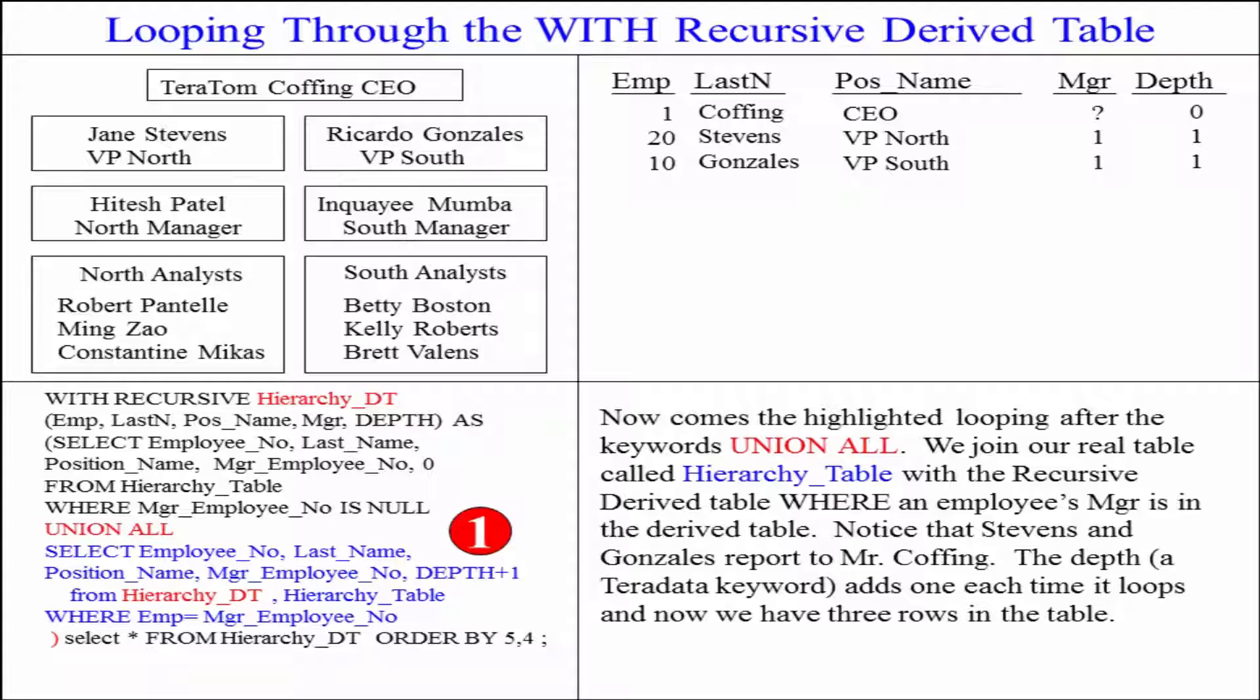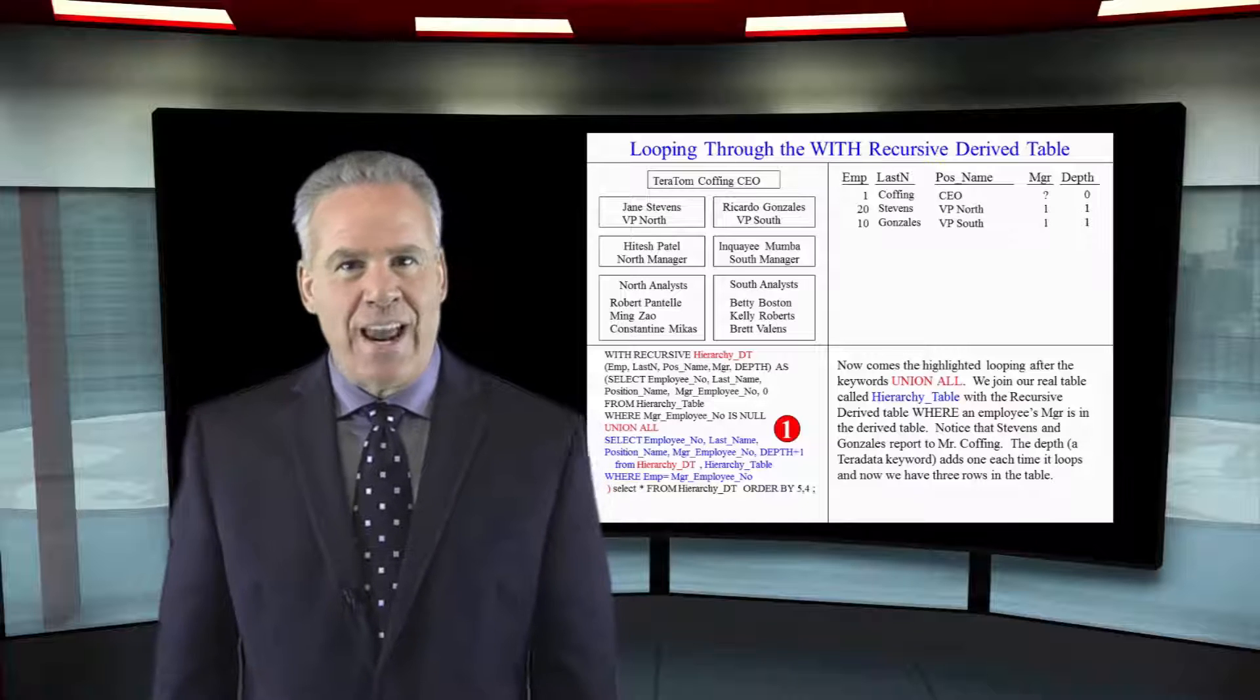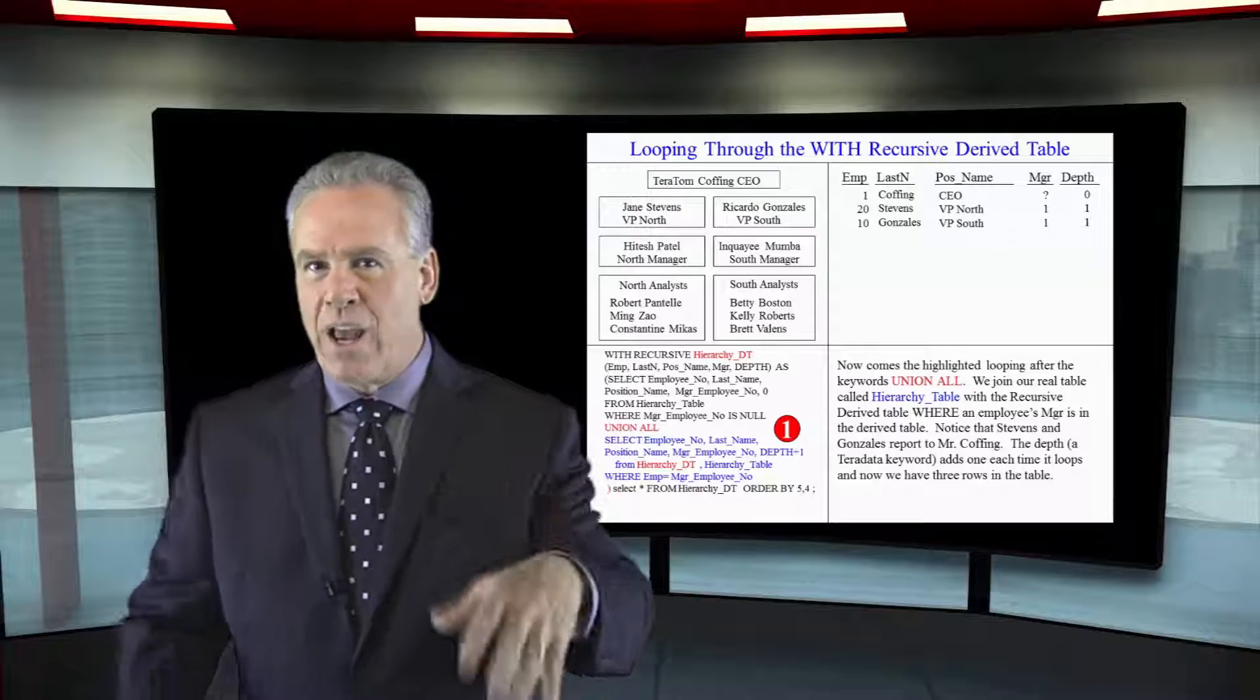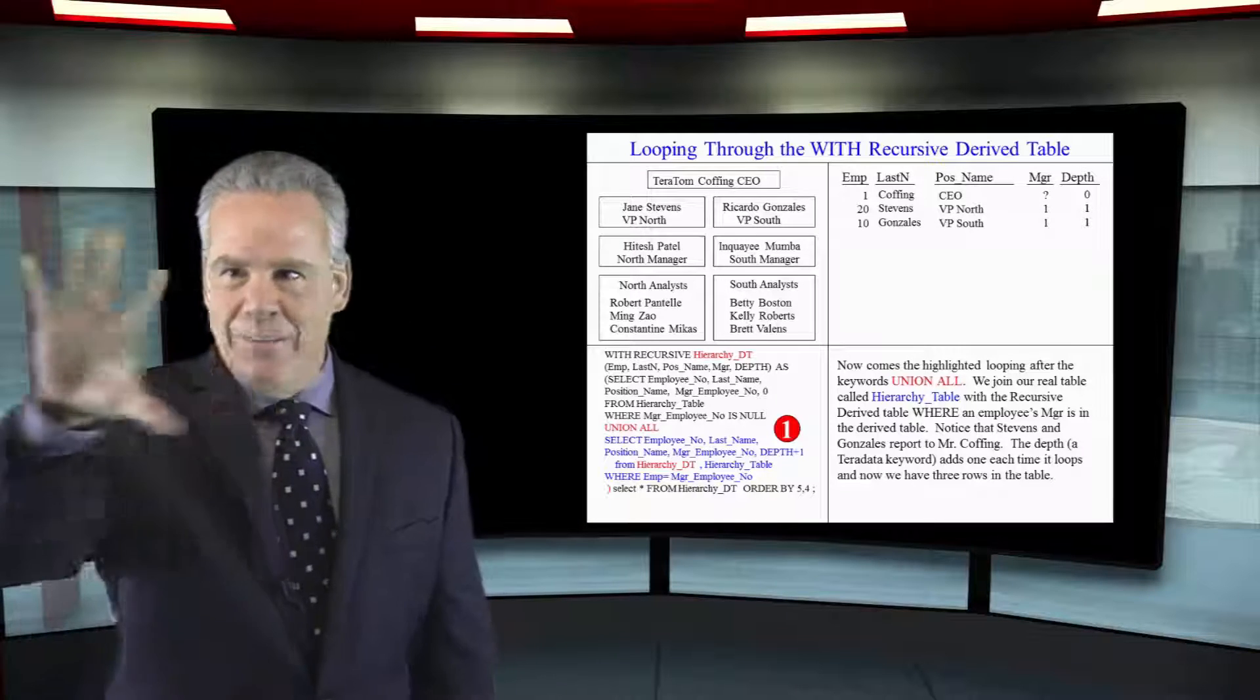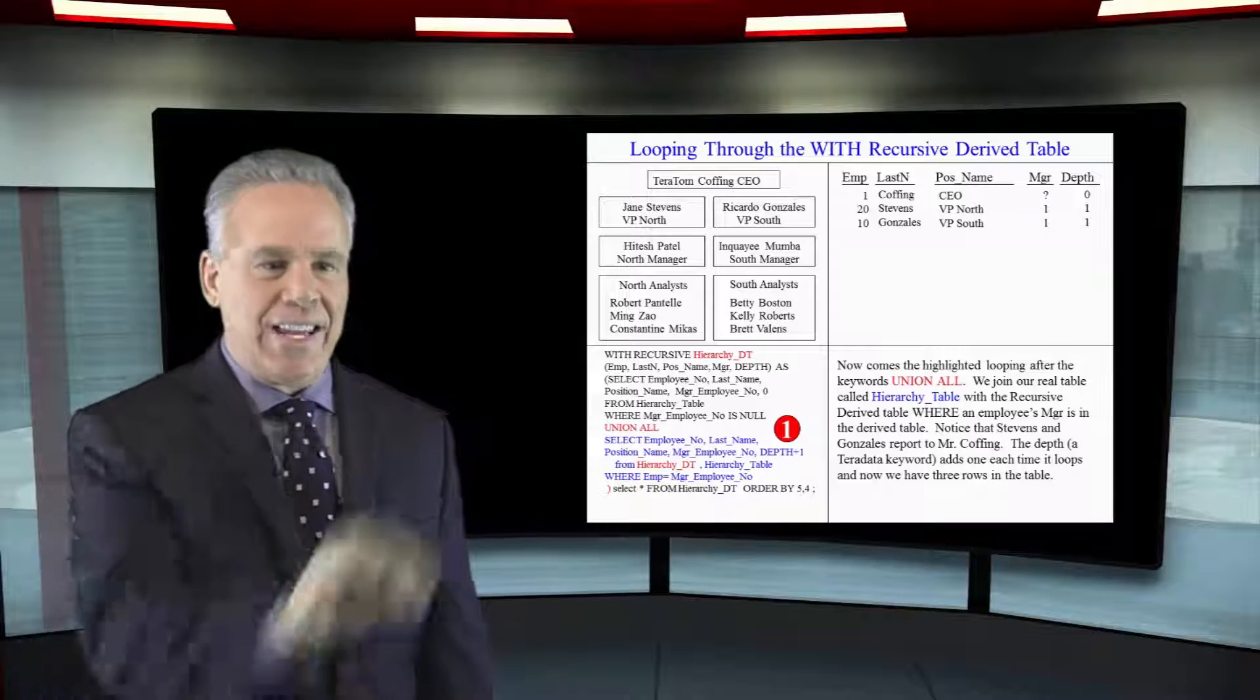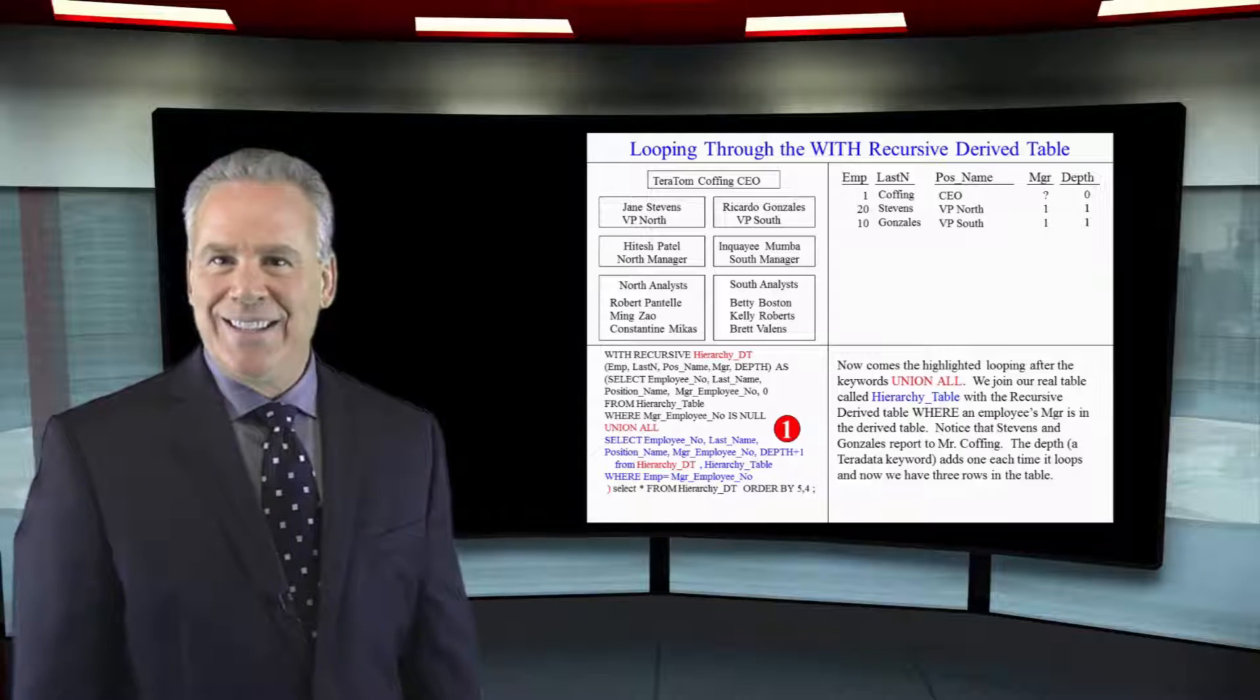Where the employee number equals the manager employee number. Tara Tom's employee number is one. These people report to a manager one. I'm going to add those two rows to the hierarchy DT table and now we've reached a depth of one because we've said I want the depth plus one and now you can see Tara Tom's at the top of the hierarchy and he's got two employees that report directly to him.